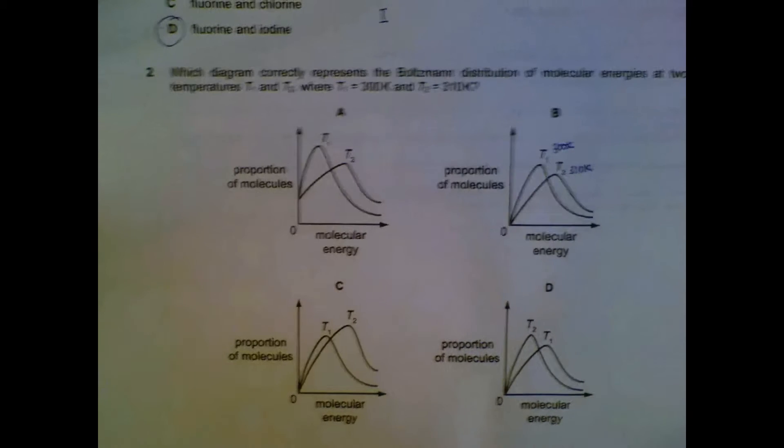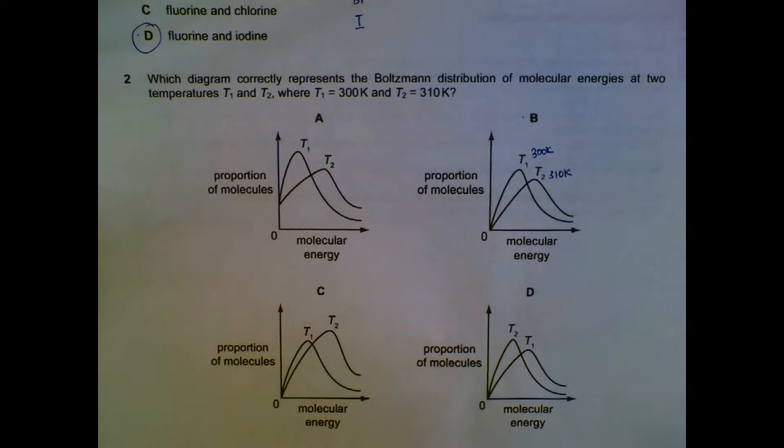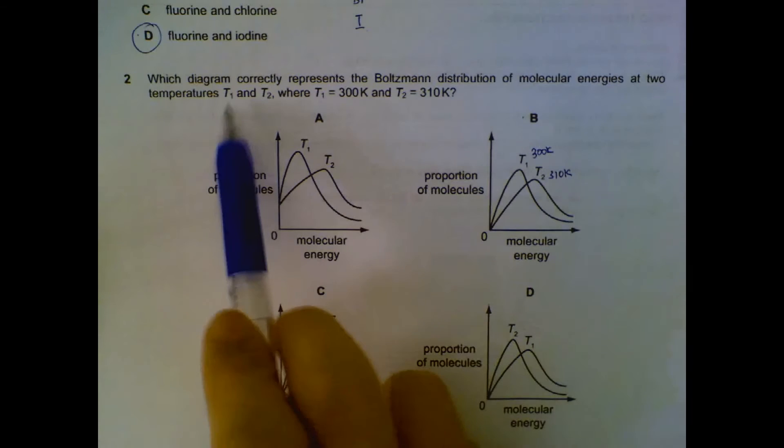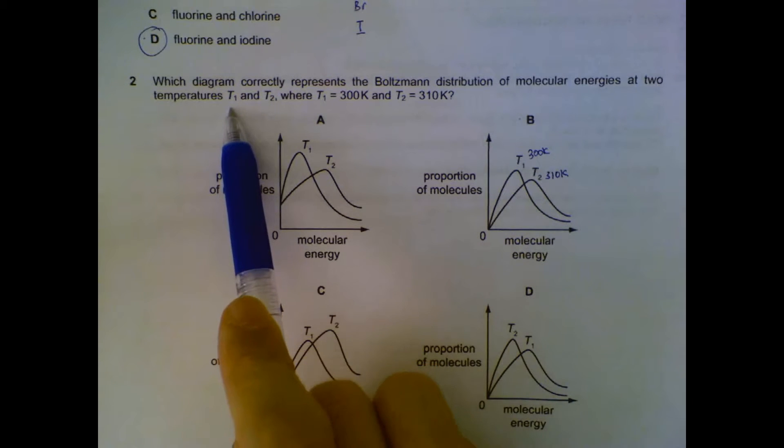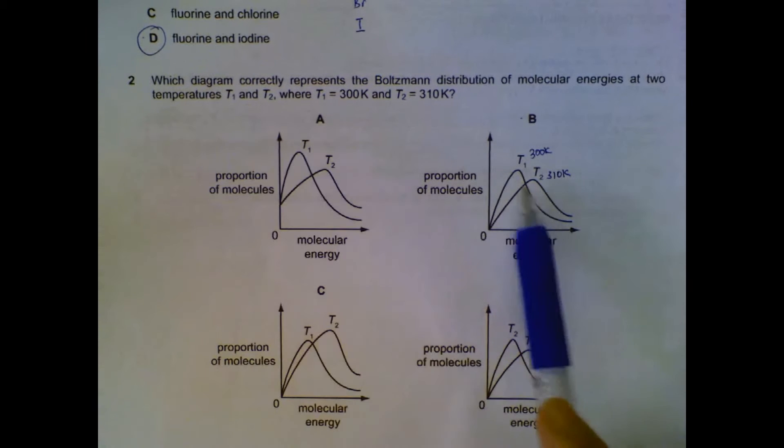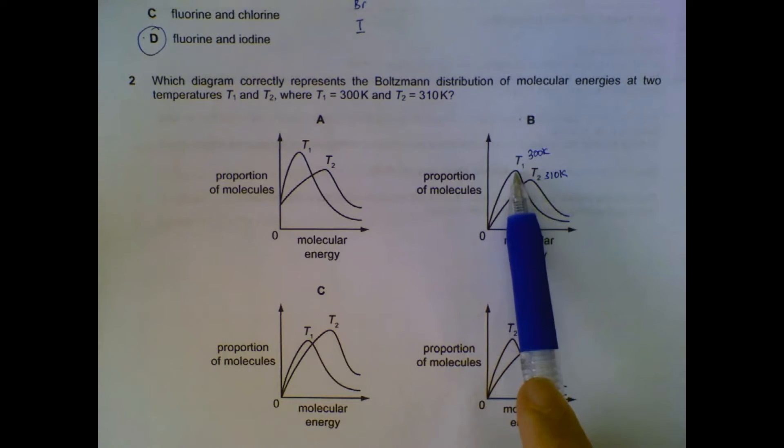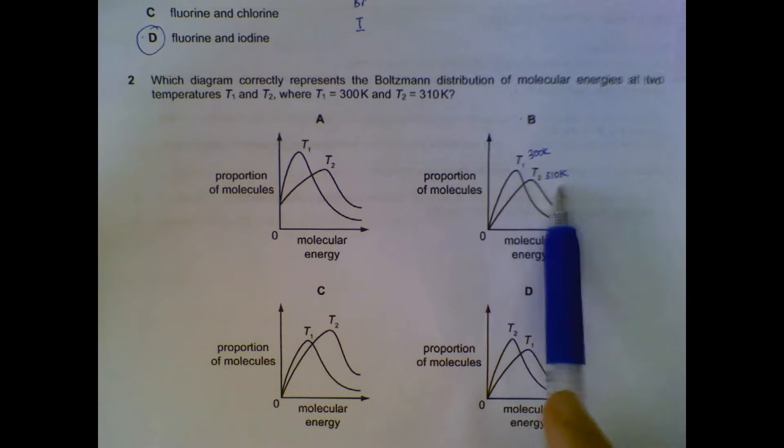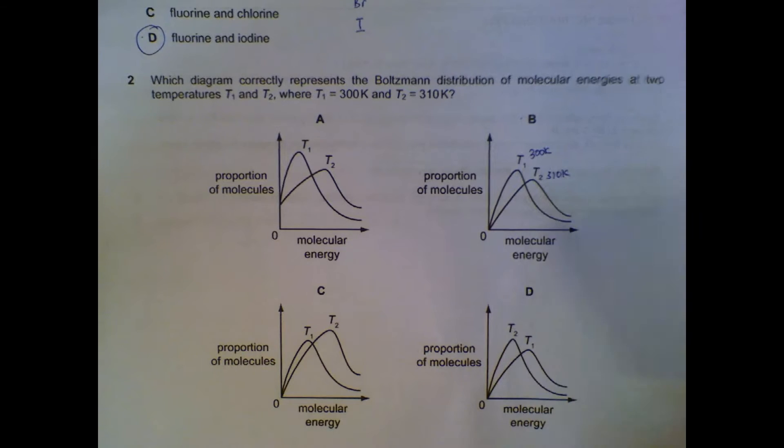Number two: which one will show the correct Boltzmann distribution? Temperature one is lower than temperature two, so the one with the lower temperature, its peak will be to the left but its peak will be higher. So T1, the peak will be on the left side; T2, the peak will be on the right side.